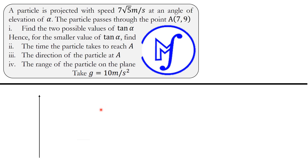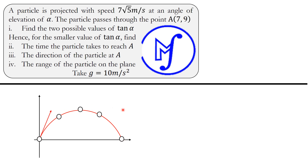Whenever you encounter problems like this, it is advisable to draw the diagram. We have our coordinate axes — vertical for the y-axis and horizontal for the x-axis. The particle is projected from the origin O and follows a trajectory. It is projected with initial speed u = 7.5 meters per second at an angle of elevation alpha. This speed has two components: u·sin α in the vertical direction and u·cos α in the horizontal direction.